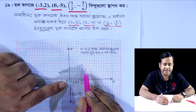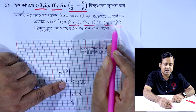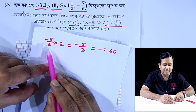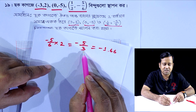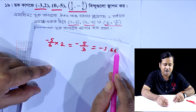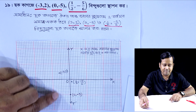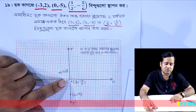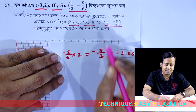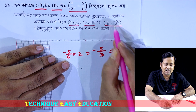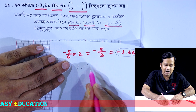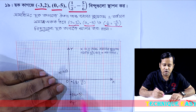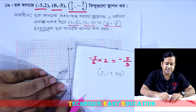And we have minus 5 by 6. So, we have 2. So, we have minus 5 by 6. So, we have minus 5 by 3. So, we have minus 1.66. So, if we have minus 1.66, we have minus 1.66.